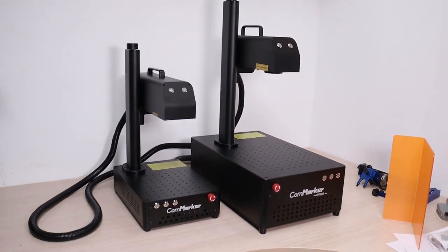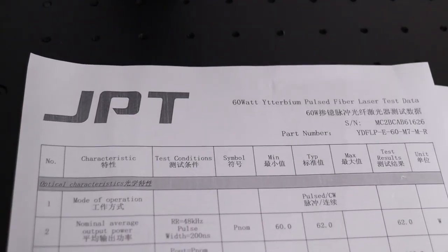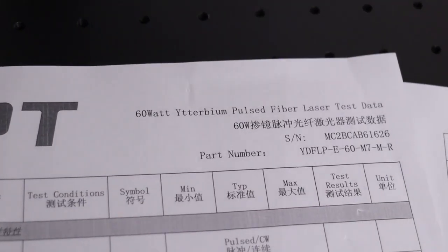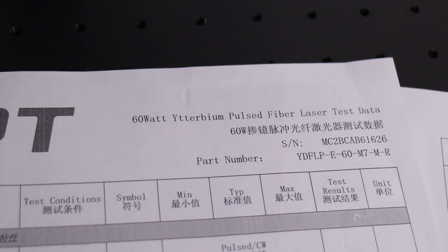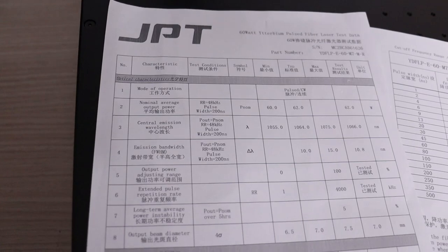The machine is substantially larger, as it has three times the power of its smaller brother. Instead of using the cheaper RACIS laser source, it uses the premium laser source from JPT brand, which has a much wider frequency range and provides excellent quality and stability.